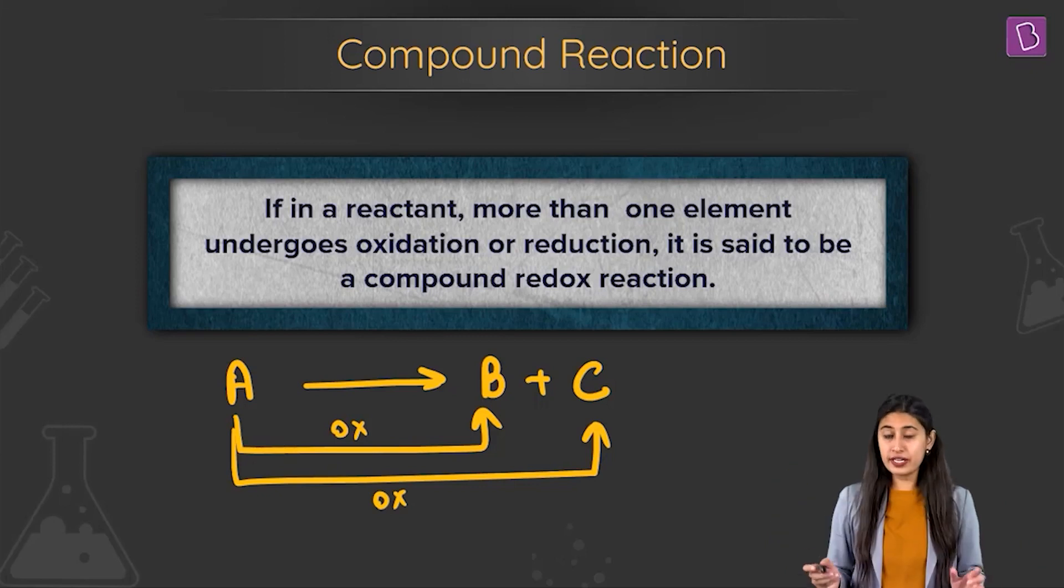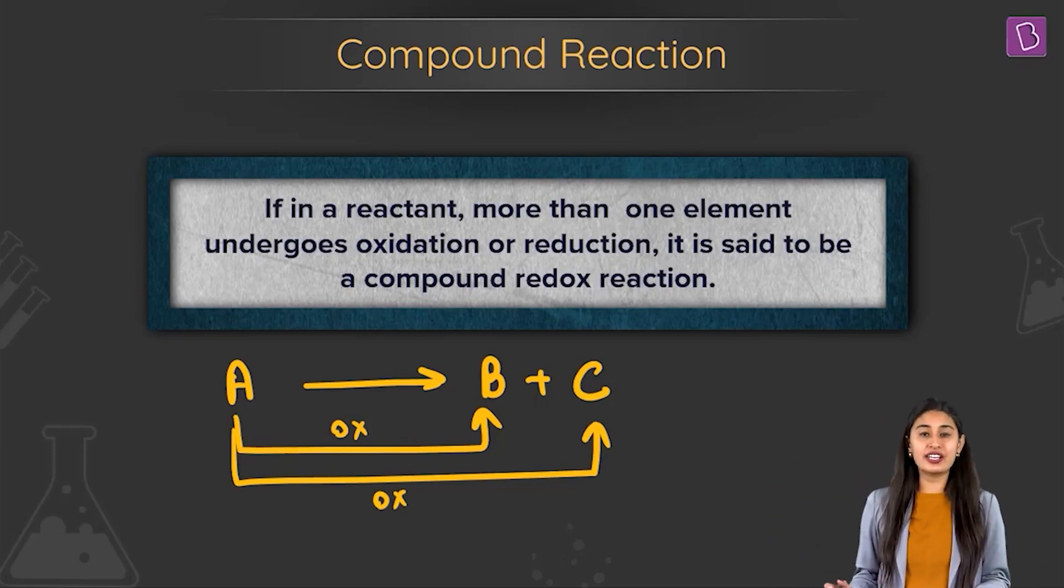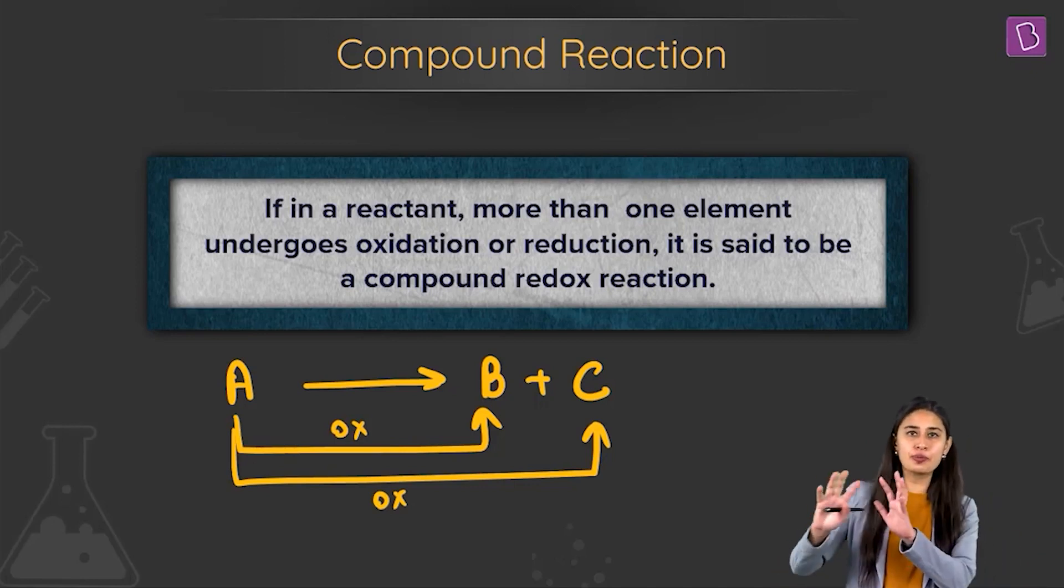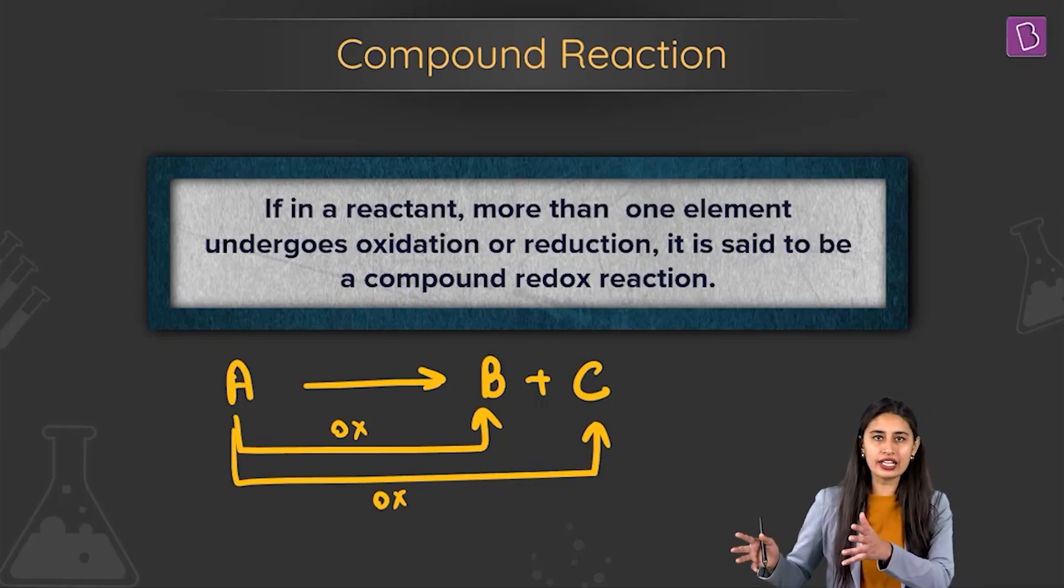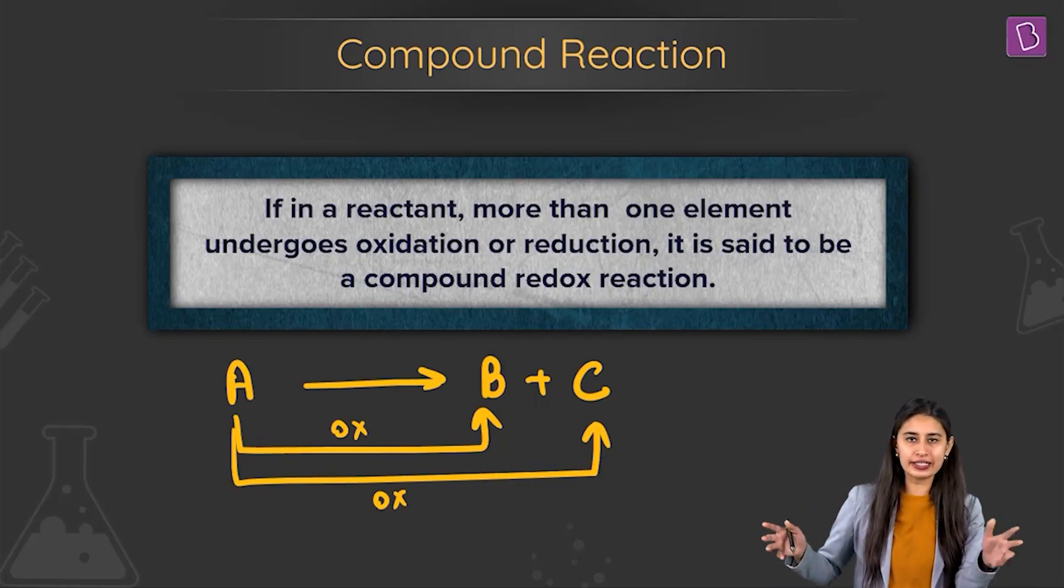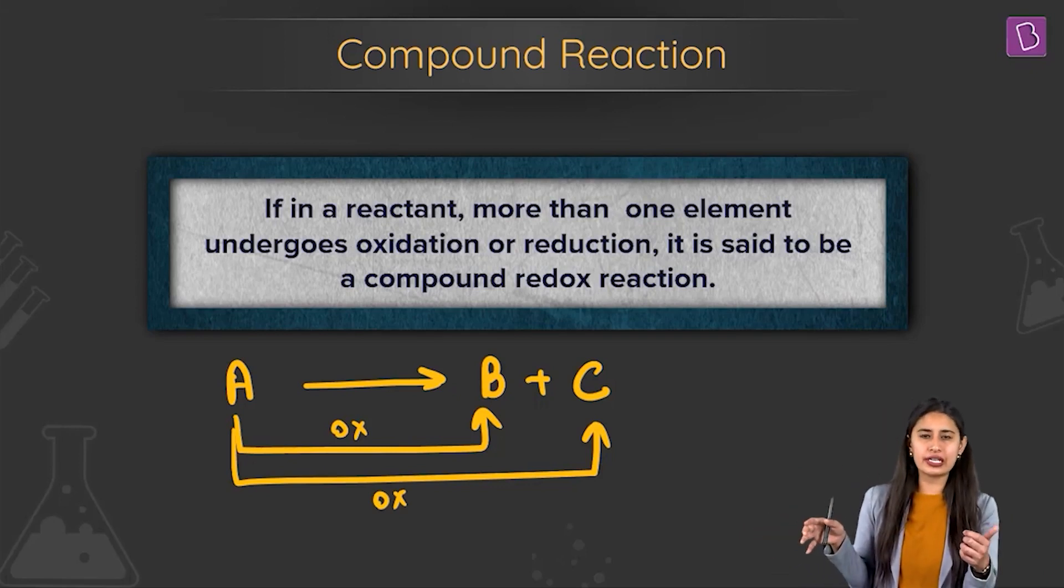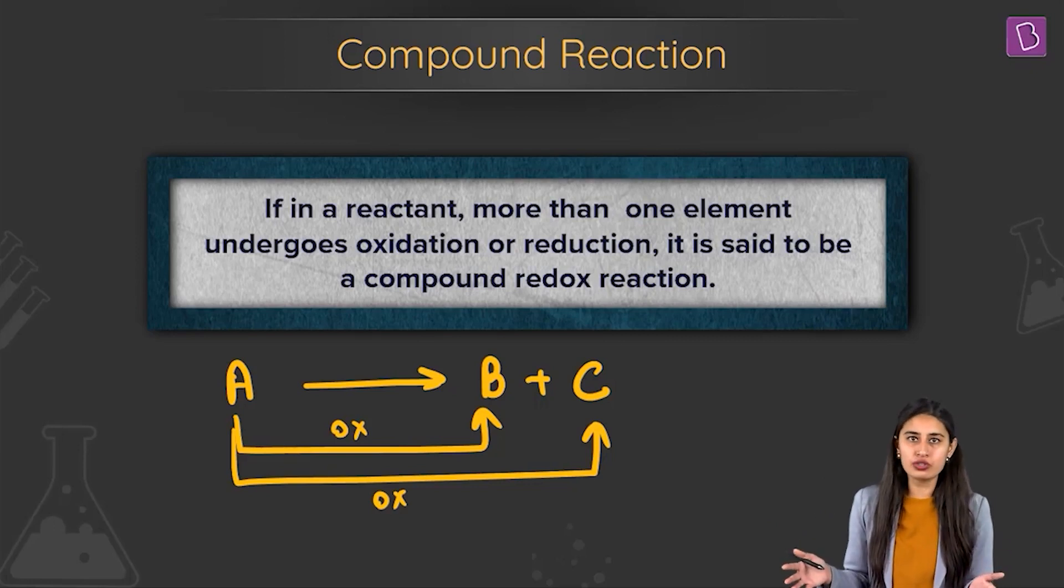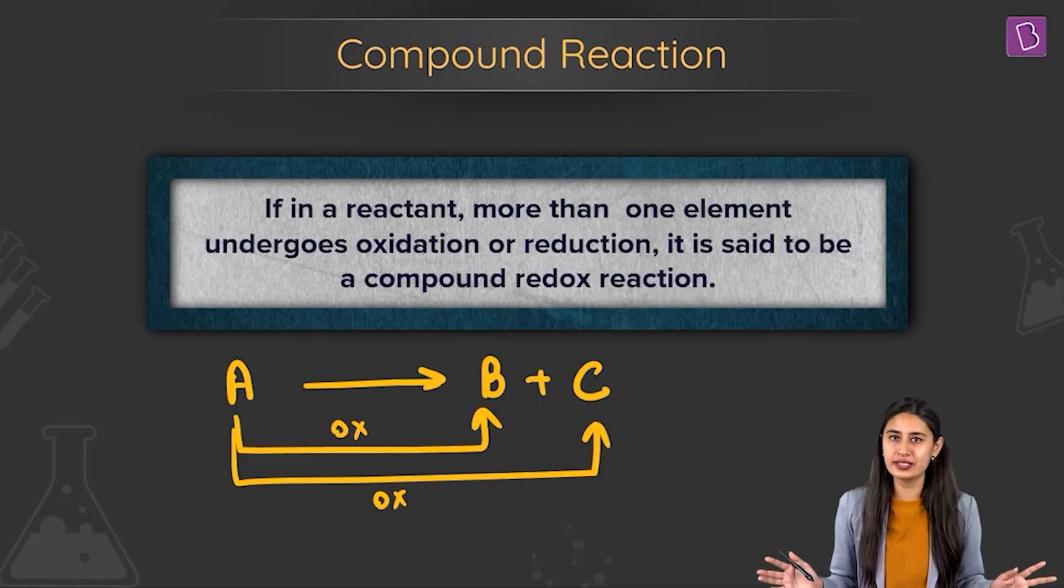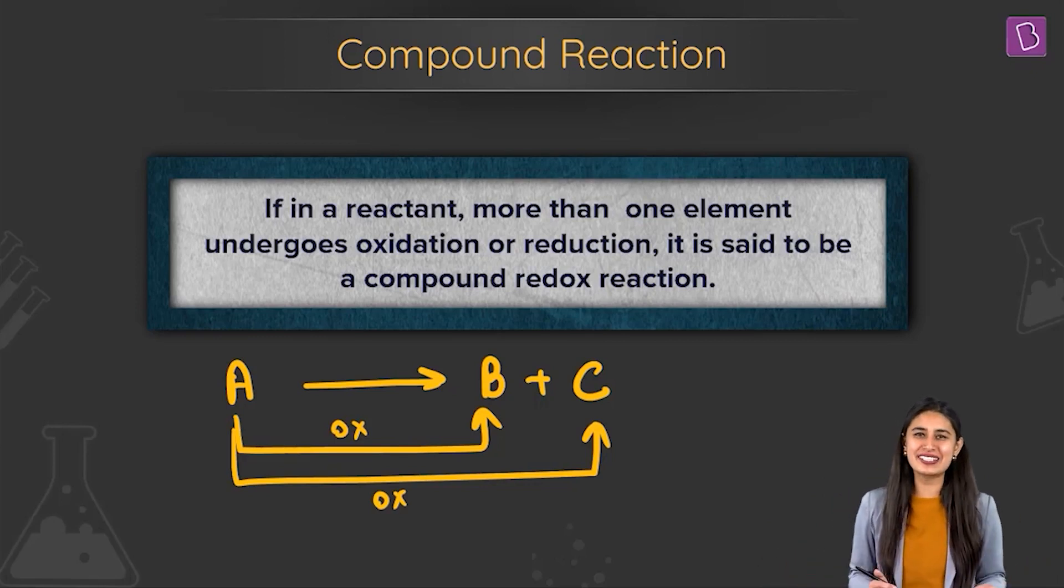So if in a reaction, more than one element undergoes oxidation or reduction, it is said to be a compound redox. So reactant giving you products, both products are getting oxidized from that particular reactant or both products that are formed are reduced from the particular reactant. So that is what is a compound redox. The half reaction is what is being considered. Example makes it crystal clear.